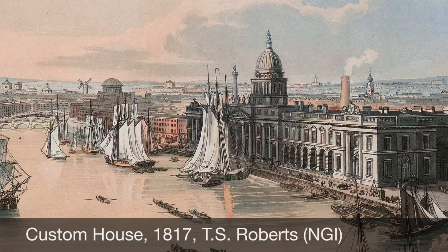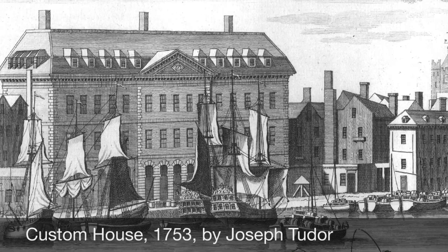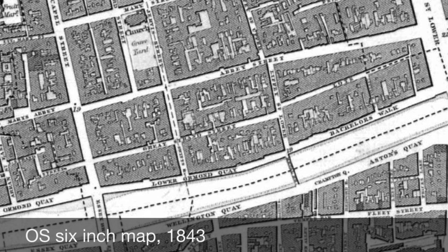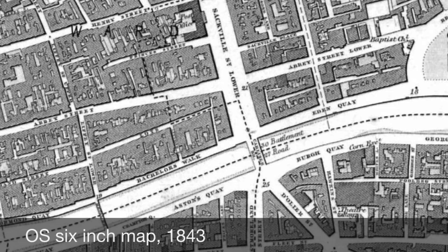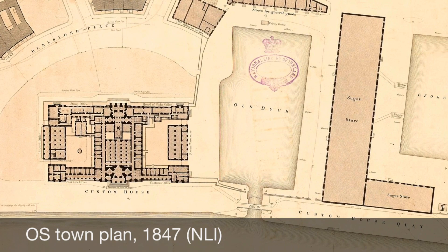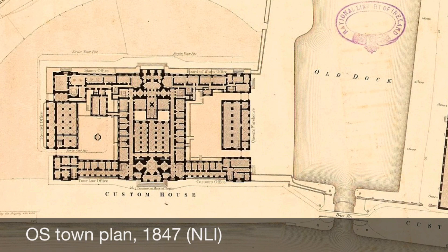Let us first take a look at the magnificent Custom House, designed by James Gandon and completed in 1785. This building replaced an older structure located further up river on Essex Quay in what was once the Old Port. With the proposed opening of the new Carlisle Bridge in 1795, it would be necessary to move the Custom House to a new location downstream and east of the new bridge. The building, which cost £250,000, is recognised as perhaps Dublin's finest 18th-century neoclassical public building. The south front facing the river is the grandest, with its magnificent portico visible on the map.